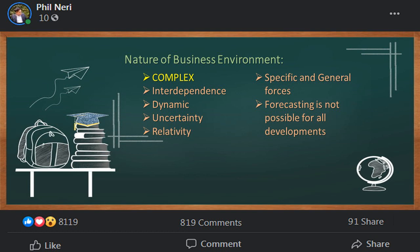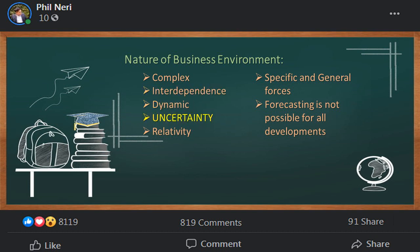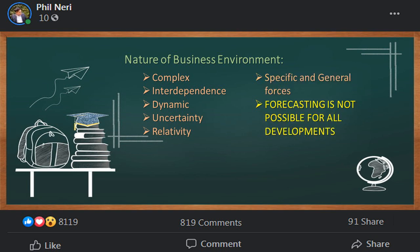Business environment consists of external forces which affect the functioning of a business. The nature of business environment has the following characteristics: first, complex; second, interdependence; third, dynamic; fourth, uncertainty; fifth, relativity; sixth, specific and general forces; and seventh, forecasting is not possible for all developments.